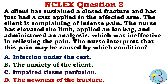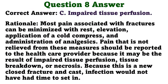A client has sustained a closed fracture and has just had a cast applied to the affected arm. The client is complaining of intense pain. The nurse has elevated the limb, applied an ice bag, and administered an analgesic, which was ineffective in relieving the pain. The nurse interprets that this pain may be caused by which condition? A. Infection under the cast. B. The anxiety of the client. C. Impaired tissue perfusion. D. The newness of the fracture. The correct answer is C: impaired tissue perfusion. Most pain associated with fractures can be minimized with rest, elevation, application of a cold compress, and administration of analgesics. Pain not relieved by these measures should be reported to the health care provider because it may be the result of impaired tissue perfusion, tissue breakdown, or necrosis. Because this is a new closed fracture, infection would not have had time to set in.